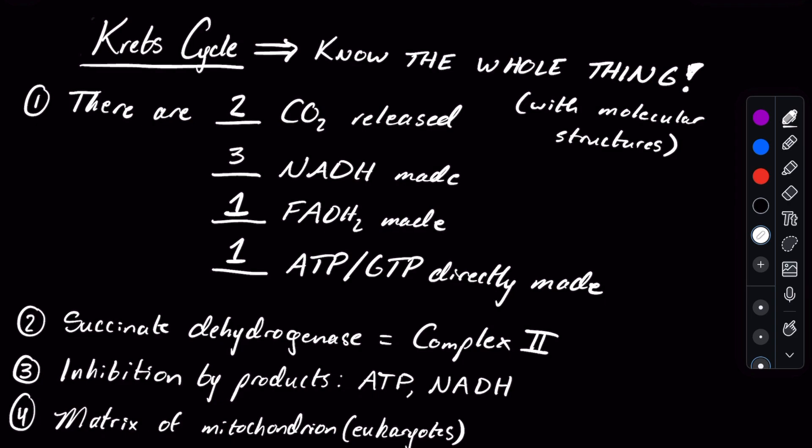There is a GTP that's directly made and then it is converted into ATP based on another enzyme. Another thing they like to test on is that succinate dehydrogenase, an enzyme of the Krebs cycle, is also Complex II in the electron transport chain. I've seen that question a few times in practice materials.